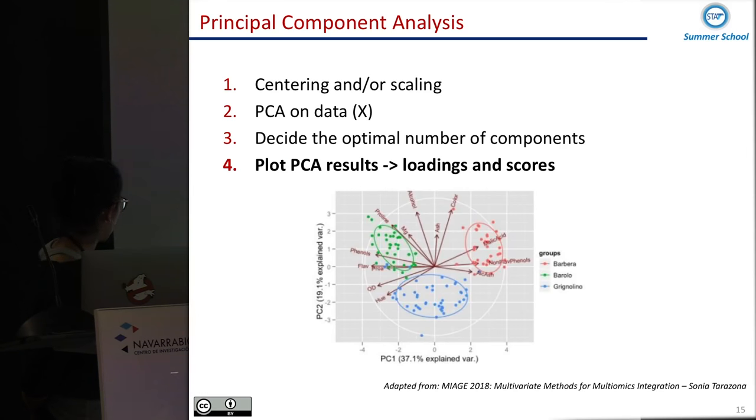Then to plot the results, we can plot both the loadings and the scores. Normally we will plot the scores that are the values for each one of the variables, and then color these according to some factors or filters. But also we can see the loadings of these arrows that you can see here.